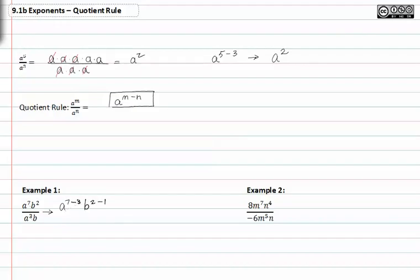Because there's one b in common to both the numerator and the denominator. Likewise, there's three a's in common to the numerator and the denominator, and so our final simplification would be a to the fourth b. Notice that if b is to the first power, we just leave it as a regular b with no exponent of one.